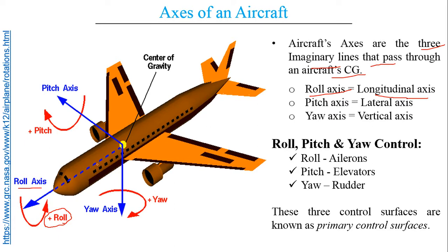The roll axis is also known as the longitudinal axis, which passes through the length of the fuselage. When we are concerned with pitch — the nose up and nose down motion — the aircraft is pitching about an axis passing through the CG. This axis is known as the pitch axis, also known as the lateral axis. These are the technical terms used in flight mechanics.